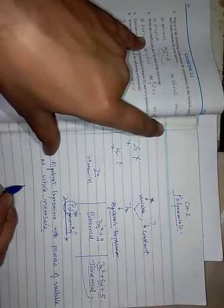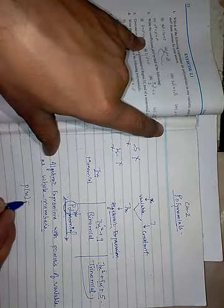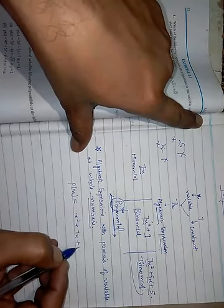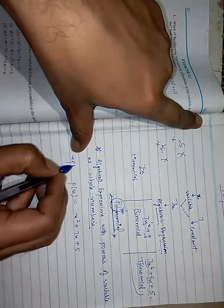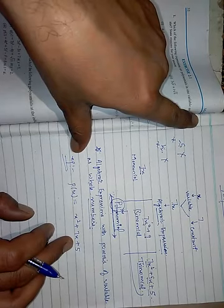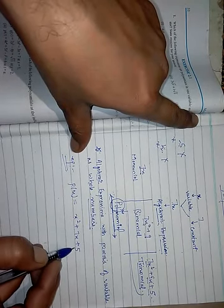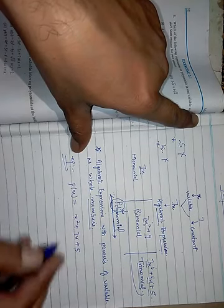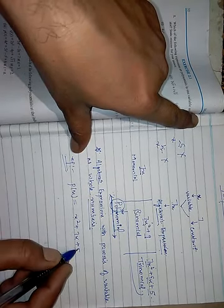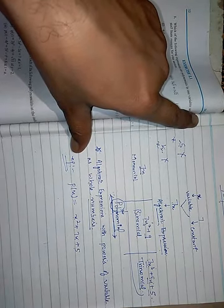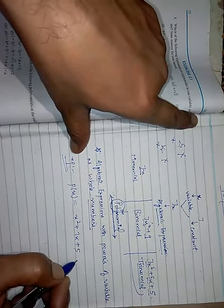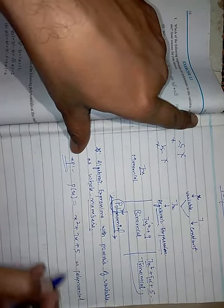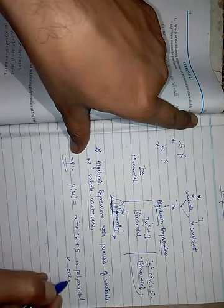We need only whole numbers as powers. So if the powers of the variable are whole numbers, then only that expression will be a polynomial. We denote it as P(x). For example, P(x) = X² + 7X + 5, with powers 2, 1, 0 — all whole numbers — so this is a polynomial in one variable.